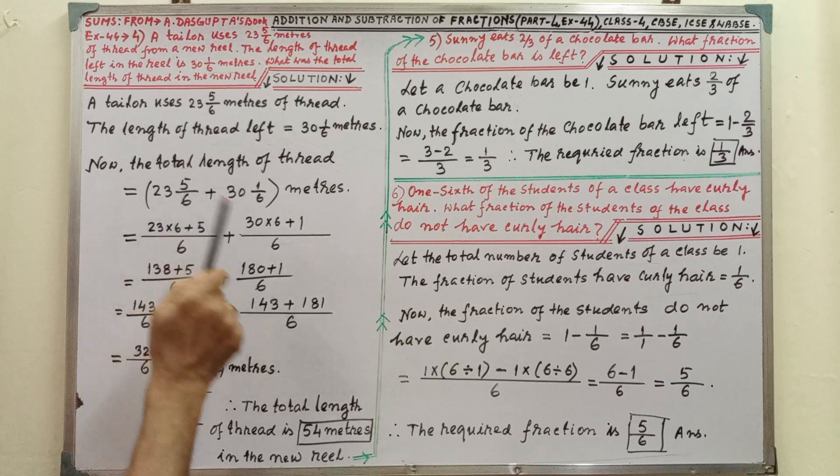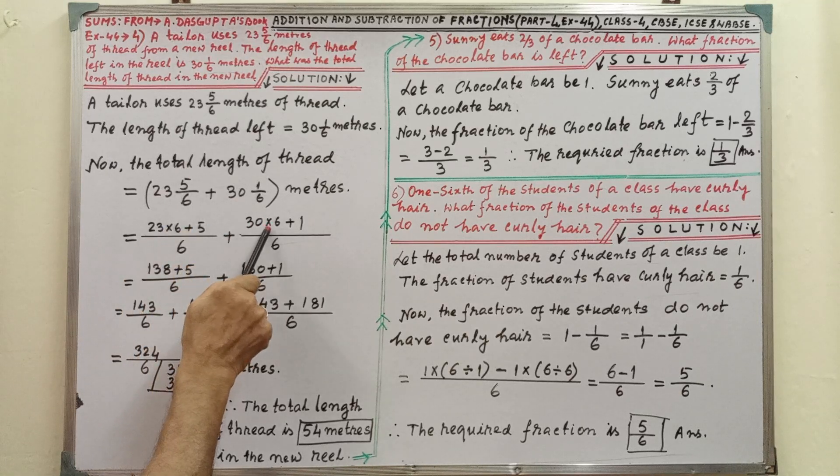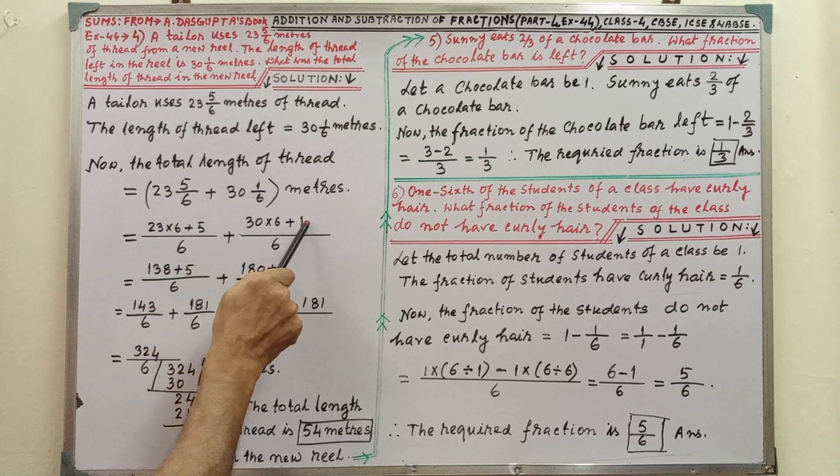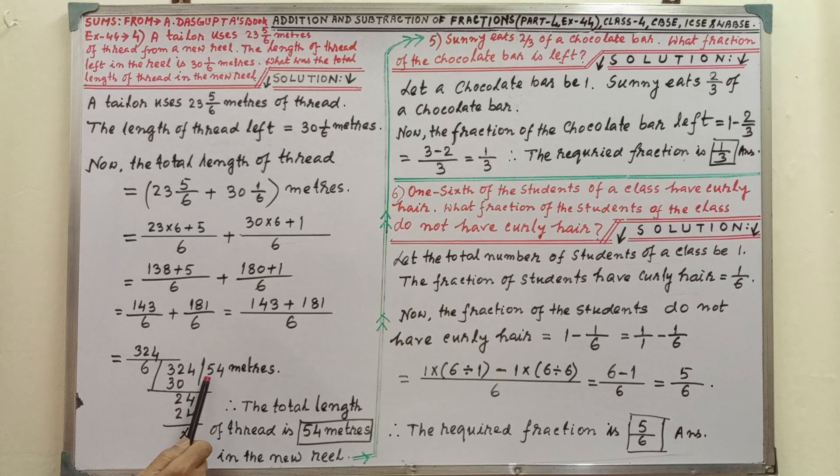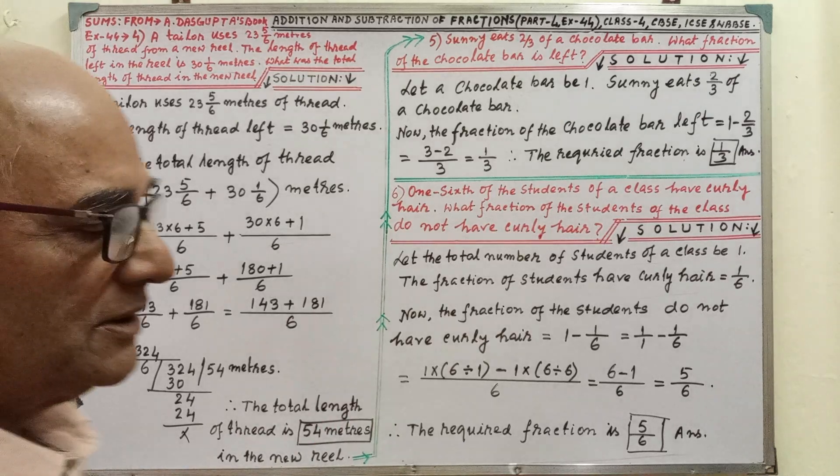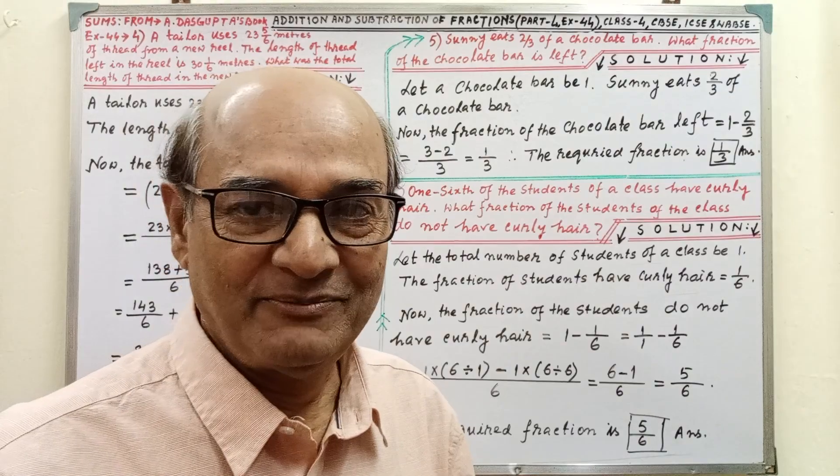But here also it is given clearly. 23 into 6 plus 5, 30 into 6, into 6 plus 1. Then by simplifying, we are getting 324 by 6. Then we have to divide. By division, we are getting 54 meters. The total length of the thread is 54 meters in the new reel. Sum is completed. Very simple.